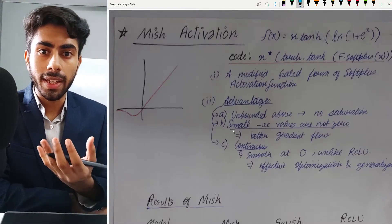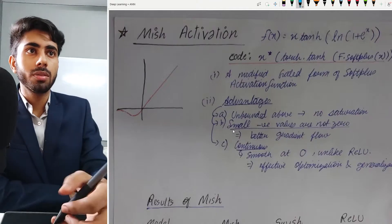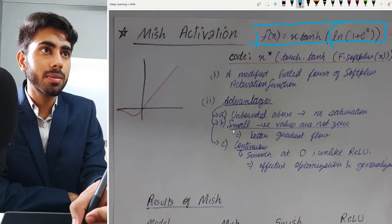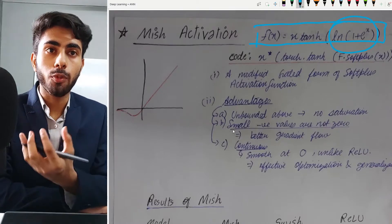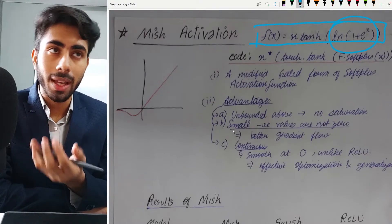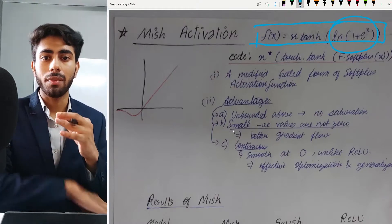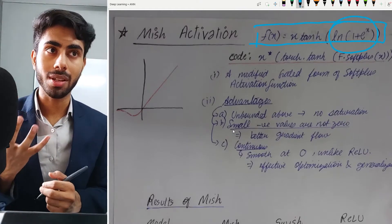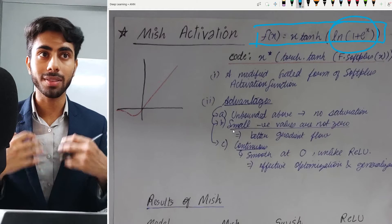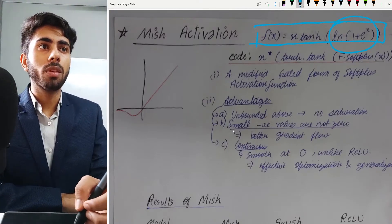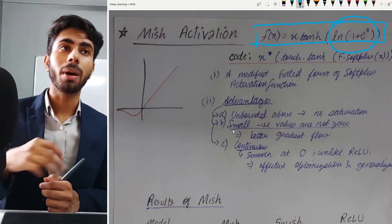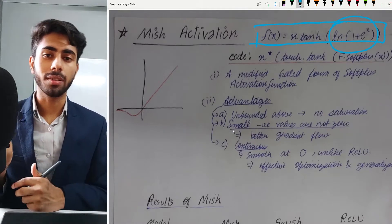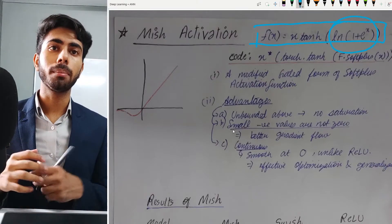First, let us see the formula of the mish activation. The formula of mish activation looks something like this. The inner portion is basically the formula of softplus activation. Mish activation is a modified gated form of softplus activation. The formula of softplus is log(1 + e^x), and if we put this term inside tanh and multiply it by x — the pre-activation value — we get the mish activation.